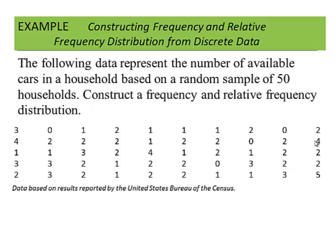Let's look at an example. The following data represent the number of available cars in the household based upon a random sample of 50 households. We're going to summarize this data using a table, actually two tables: a frequency and a relative frequency.